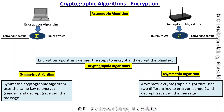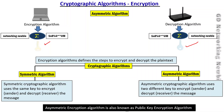The second one is asymmetric encryption, or asymmetric encryption algorithm. Here two different keys are used to encrypt and decrypt the message. At the encryption end we use one key to encrypt the message, and at the decryption end we use a different key. So we are using two different keys, and this is known as the asymmetric algorithm. The second name for this algorithm is public key encryption — so it is also called asymmetric encryption algorithm or public key encryption.